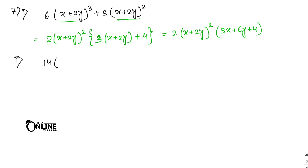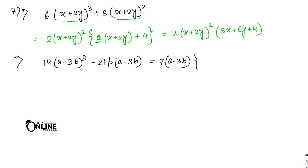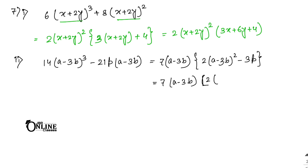Sum number 7.2: 14(a - 3b)³ - 21p(a - 3b). The common term is (a - 3b), and the HCF of 14 and 21 is 7. So write down 7(a - 3b). Inside the bracket: 2(a - 3b)² - 3p. The final answer is 7(a - 3b)[2(a - 3b)² - 3p].